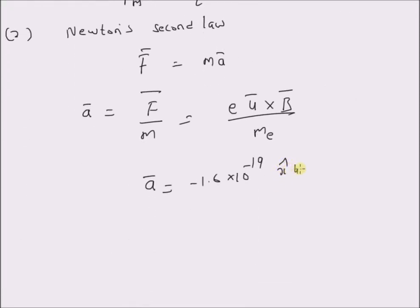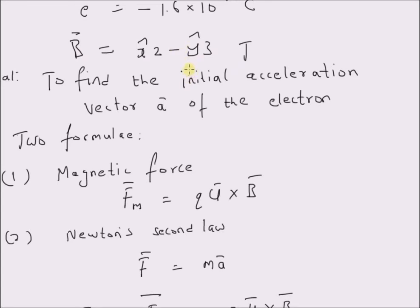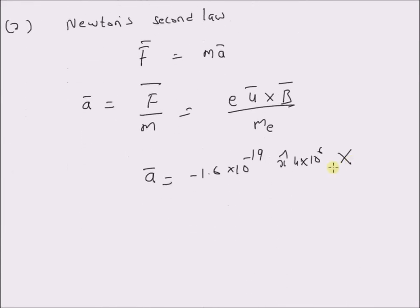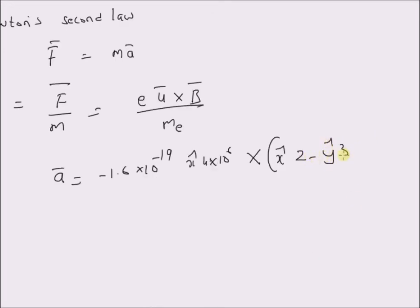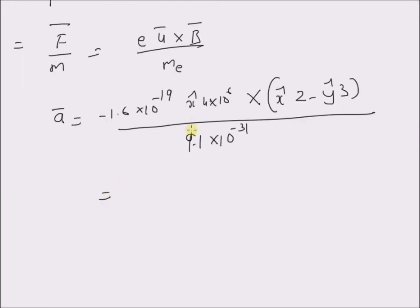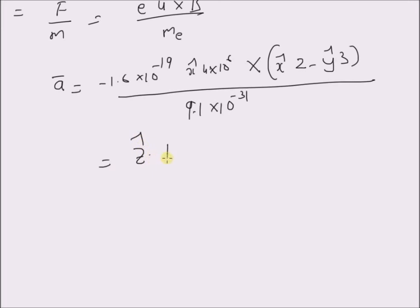So we have x-cap multiplied by 4 times 10 to the power 6 cross product with the magnetic field vector, which is x-cap 2 minus y-cap 3, and the denominator is 9.1 times 10 to the power minus 31. For the numerator, the cross product between x-cap and x-cap itself is 0, because the cross product between two parallel vectors or the same vectors is always 0. Then the cross product between x-cap and y-cap is z-cap. So the solution is z-cap multiplied by 1.6 times 10 to the power minus 19 times 4 times 10 to the power 6 times 3, divided by 9.1 times 10 to the power minus 31.